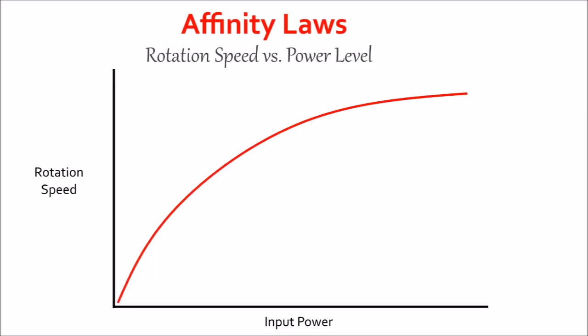Typically, with a motor, we model the relationship between input power and rotation speed with something called affinity laws. And they generally have to say that the output speed of a motor is related to the inverse square of the input power.